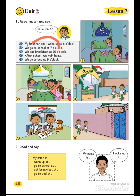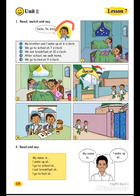Now let's read the sentences in the box. My brother and I woke up at 6 o'clock. This is Adil. Hello, I am Adil. We go to school at 7 o'clock. We eat breakfast at 10 o'clock. After school, we walk home. We go to bed at 9 o'clock.